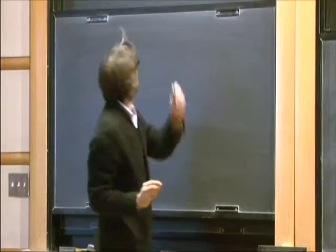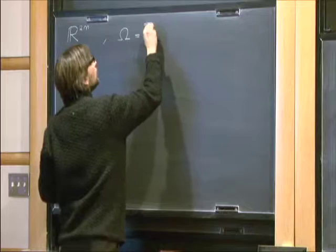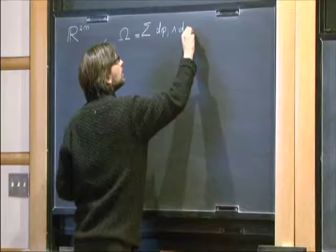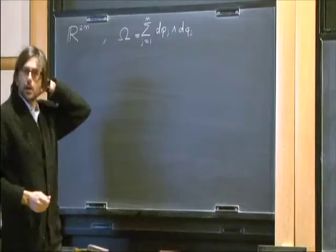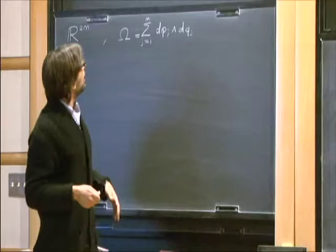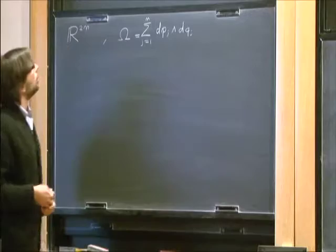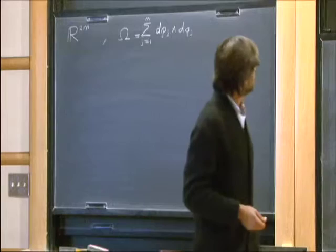Our setting is the classical one. We are in R²ⁿ with the standard symplectic form dp_j ∧ dq_j — I use the physical notation p and q. My talk today is about an old and somehow fundamental question: how rigid are symplectic diffeomorphisms in comparison to volume-preserving ones? What are the things which volume-preserving diffeomorphisms can do and instead a symplectic one cannot?